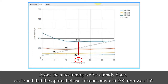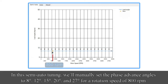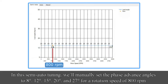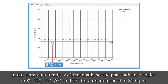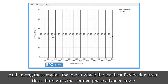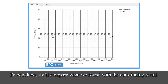From the auto-tuning we've already done, we found that the optimal phase advance angle at 800 RPM was 15 degrees. In this semi-auto tuning, we'll manually set the phase advance angles to 8 degrees, 12 degrees, 15 degrees, 20 degrees, and 27 degrees for a rotation speed of 800 RPM. Among these angles, the one at which the smallest feedback current flows through is the optimal phase advance angle. To conclude, we'll compare what we found with the auto-tuning result.